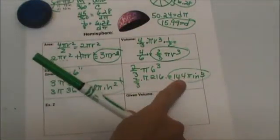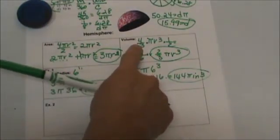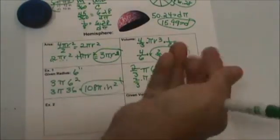So you can do that. The other option for a hemisphere you can find the volume of the whole sphere and just take that answer and divide it in half if you want to.